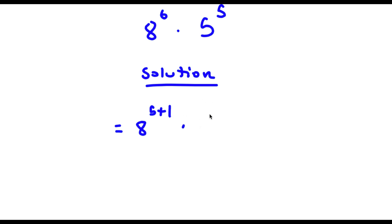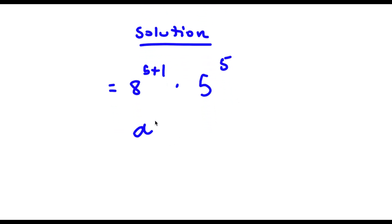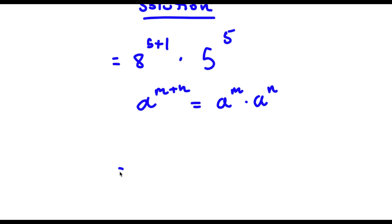So now I have 8 to the power of 5 plus 1, times 5 to the power of 5. Now if I have something in the form a to the power of m plus n, this is the same thing as a to the power of m times a to the power of n. So a to the power of 5 plus 1 is going to equal a to the power of 5 times a to the power of 1.